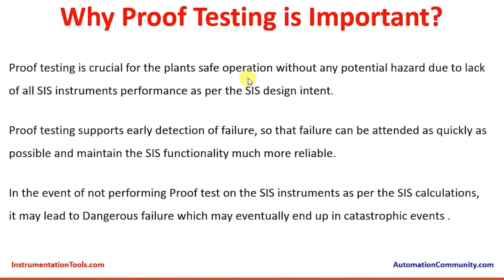Why is proof testing important? Proof testing is crucial for the plant's safe operation without any potential hazard due to lack of Safety Instrumented System performance as per the SIS design intent. Proof testing supports early detection of failure so that failure can be attended to as quickly as possible and the SIS functionality maintained much more reliably.